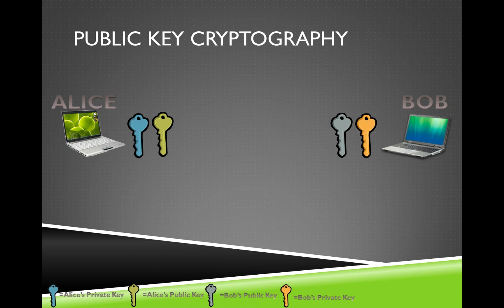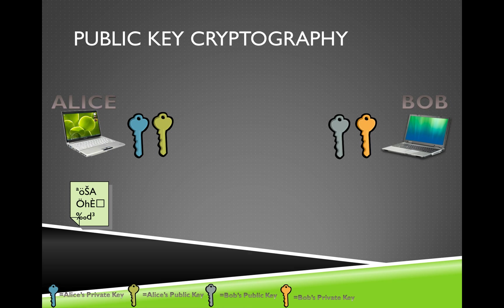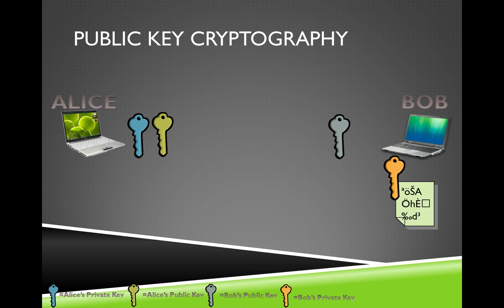Assuming Alice and Bob want to encrypt data with each other, here is the public key cryptography example of how that works. Alice has some data she wants to encrypt and send to Bob. What she does is encrypt it with Bob's public key. Once the data is encrypted with Bob's public key, she can transmit it to Bob. Bob then uses his private key to decrypt that data. The difference from symmetric cryptography is that while the public key must be shared, that doesn't impact security because Bob is not using that same key to decrypt it.